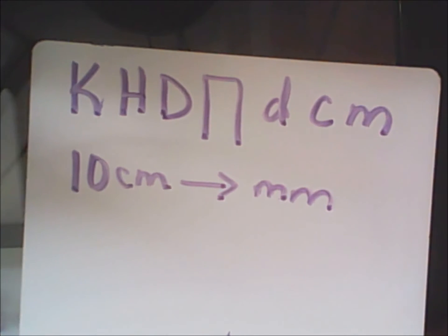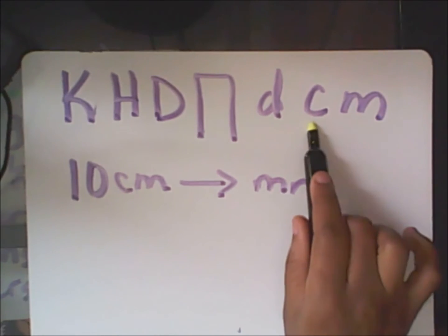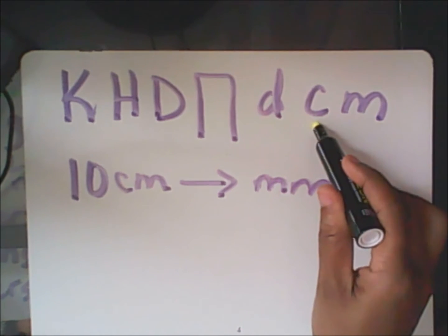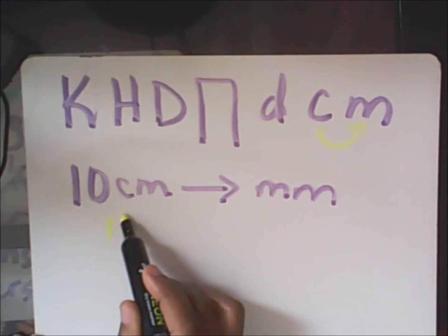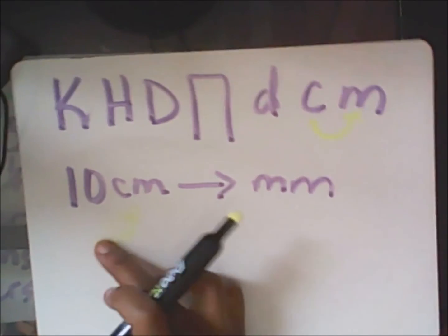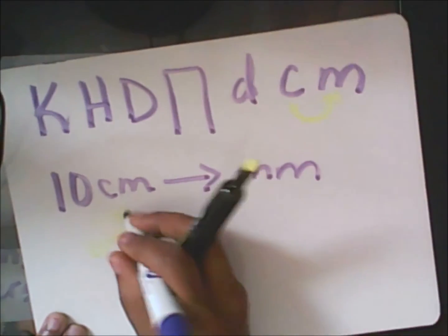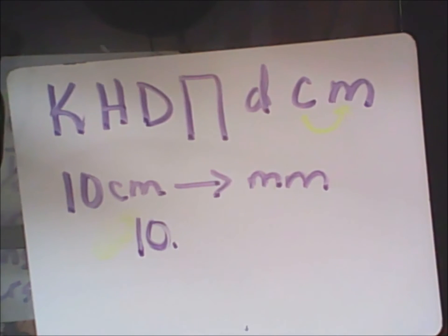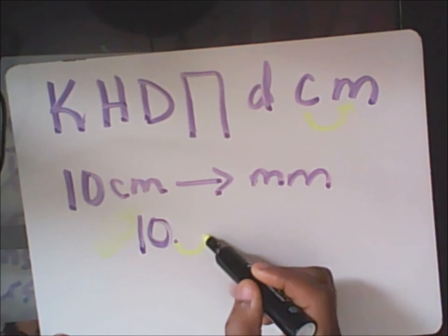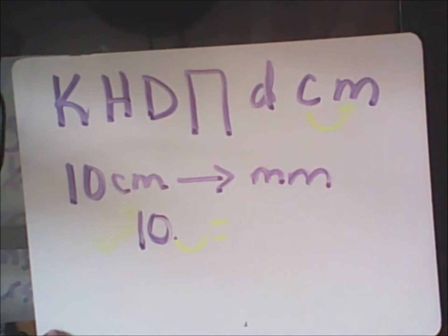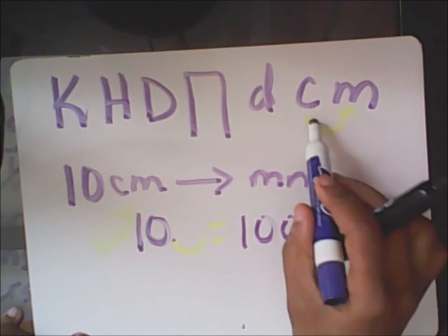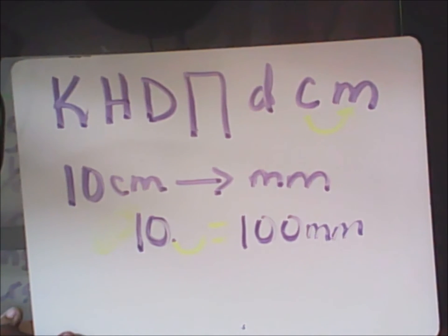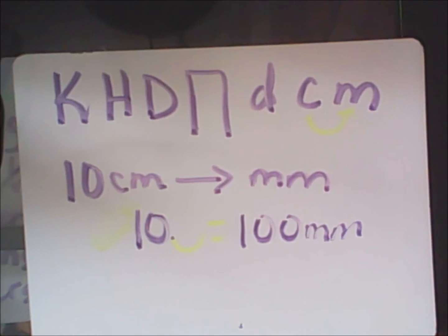Let's get started. Here's an example where I ask you to convert 10 centimeters to millimeters. Centimeters is here — all I'm going to do is go one place to the right. You're going to move your decimal one place to the right. Assume that your decimal was at the end of that number, and simply move it over one place to the right, so you end up with 100 millimeters.